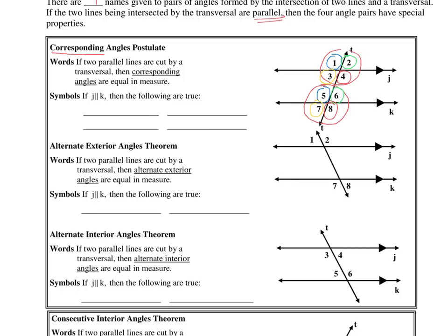Corresponding angles would perfectly overlap if you put one over the other, so they're equal in measure. Measurement of angle one equals measurement of angle five. You can also say the angles are congruent. Congruence has to do with shape — two objects that overlap perfectly — whereas equality has to do with numbers. You wouldn't write X is congruent to 60 degrees; you'd only use equals when working with numbers.